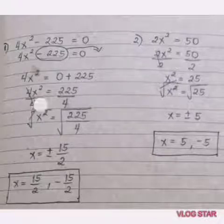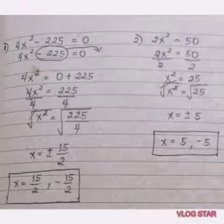We have now 4x² equals 225. Now, divide both sides by 4.